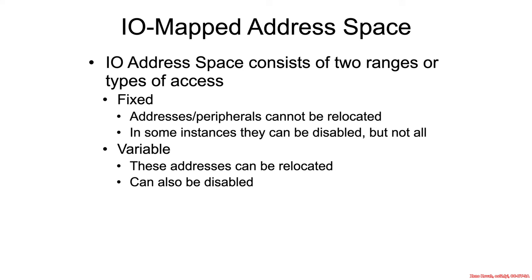The first thing to know is that there are actually two different types of port IO address spaces. There are fixed ports, which are always going to be at a very specific port — they can't be relocated, and sometimes they can be disabled, but not always. And then there are variable ports, which can be assigned a particular port by software such as the BIOS or the operating system, and they can be moved around. No matter where they're moved in the port IO address space, they will still map to the same particular piece of hardware.